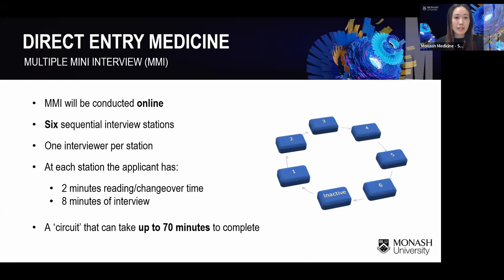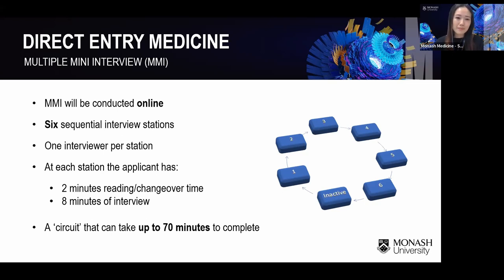Going forward, all MMIs will be conducted online. MMIs will be conducted in December if you're shortlisted based on UCAT, or in January otherwise. There will be six sequential interview stations with one interviewer per station. Once you finish the first station you move to stations 2, 3, 4, 5, and 6. Each station is independent — your responses in station 1 will not impact subsequent stations. The whole circuit takes about 70 to 80 minutes to complete.